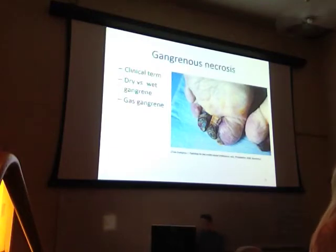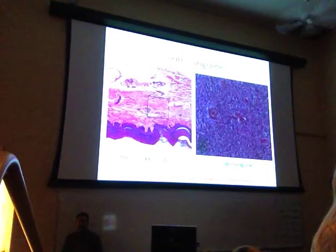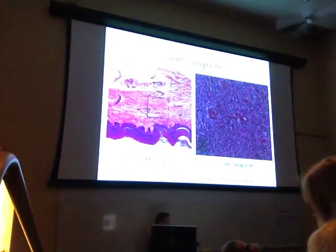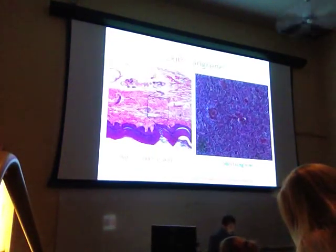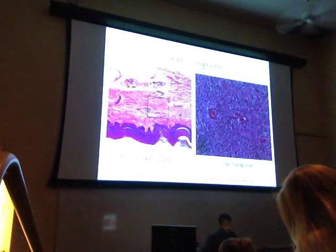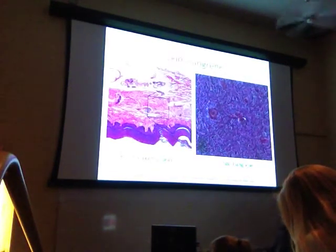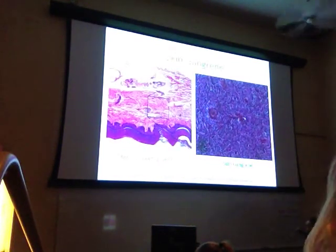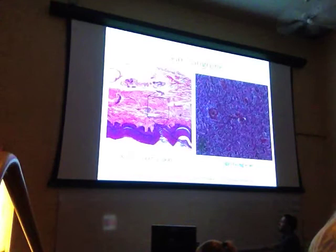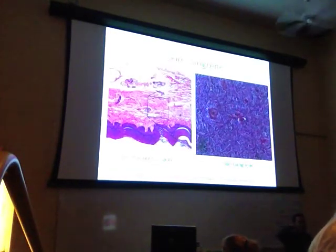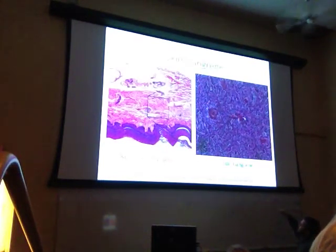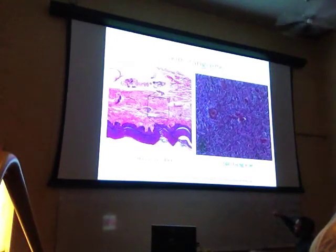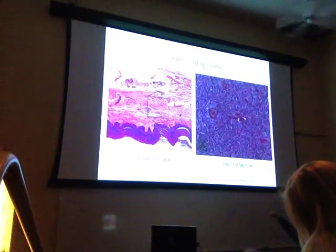If you look at frostbite or this example of skin gangrene histologically, this is another great comparison slide. On the left is normal plantar skin — the same type of skin sample you looked at in your prerequisite courses. This is the epidermis up here, this is the epidermis-dermal interface, and this is the dermis.